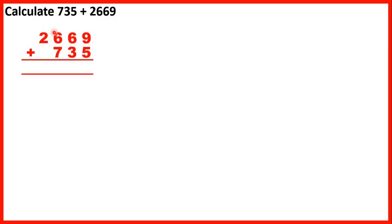Calculate 735 plus 2669. So we can set this out as a column addition, writing the number with the most digits on top and lining up the numbers on the right-hand side. 9 plus 5 is 14, so that's 1, 4. 1 plus 6 plus 3 is 10, so 1, 0. 1 plus 6 plus 7 is 14, so 1, 4. And 1 plus 2 is 3. So we have 3,404.